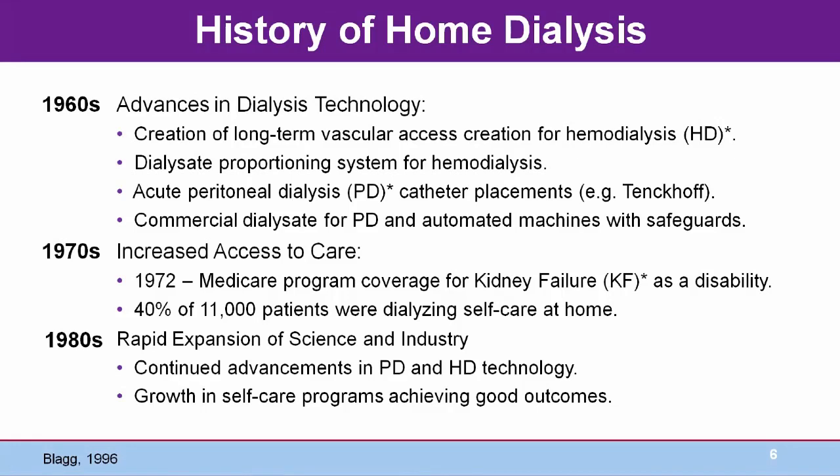With advancing technology and mounting pressure from many patients dying due to lack of care and financial resources, the U.S. government made kidney failure part of the Medicare Disability Program in 1972. At that time, 40% of patients were doing self-care at home. While many home hemodialysis programs flourished, especially in rural areas, in-center dialysis centers in hospitals became the norm.